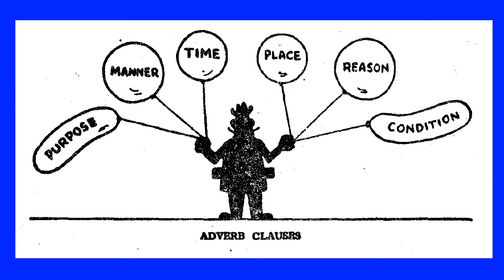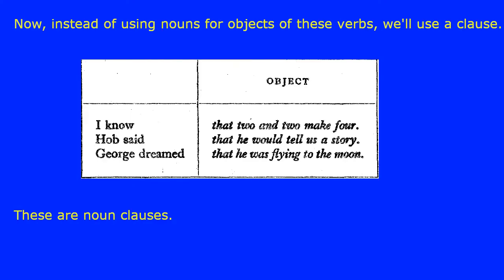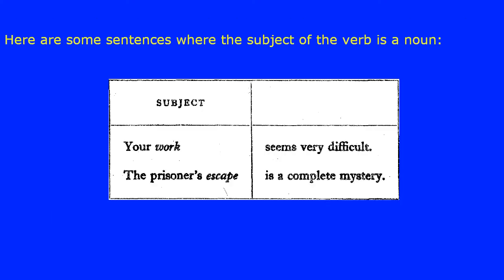You will often see a clause that is the object, or more rarely the subject, of a verb. The subjects or objects of verbs are usually nouns, so these clauses which are doing the work of nouns are called noun clauses. Here are some sentences where the object is a noun: I know arithmetic; Hob said a few words; George dreamed a dream. Now instead of using nouns for objects, we'll use a clause: I know that two and two make four; Hob said that he would tell us a story; George dreamed that he was flying to the moon. These are noun clauses.